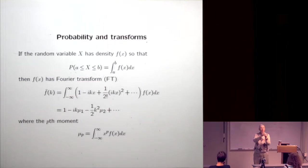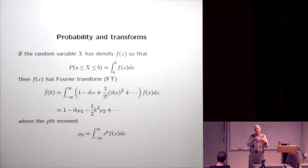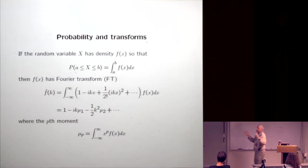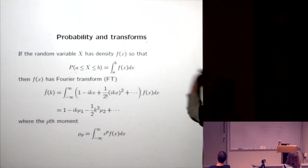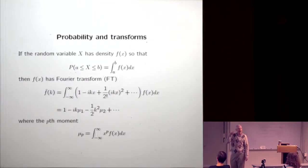Brownian motion is a way to approximate a random walk and vice versa. If particles follow a random walk and you track enough of them and make a histogram of locations, you can solve a diffusion equation. Taking a random variable with a density and its Fourier transform — defined here as the integral of e^(−ikx) times the density — when you expand e^(−ikx) in a Taylor series and integrate term by term, you recover the moments of the distribution.